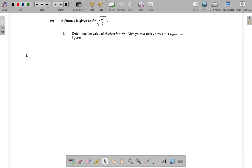We have D equals the square root of 4H over 5. Remember 4H really means 4 multiplied by H, but we usually leave out the multiplication sign between the number and the letter.